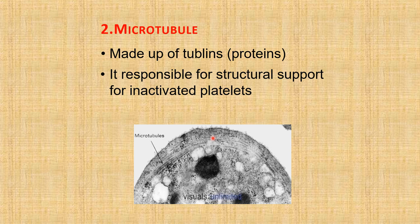The microfilaments mainly consist of actin molecules that polymerize into filamentous bundles. There are also a few myosin filaments attached to actin filaments. These actin and myosin constitute the contractile system.